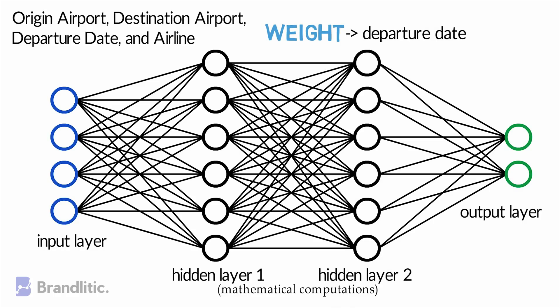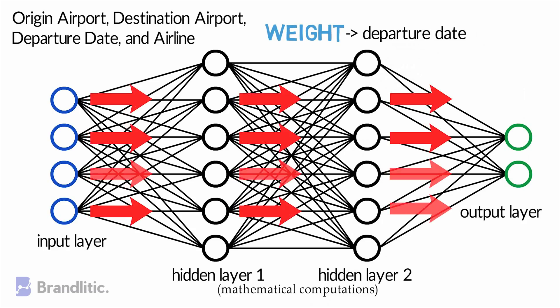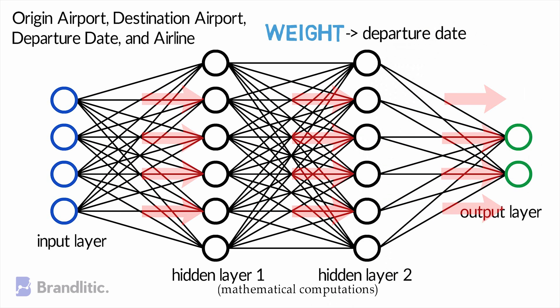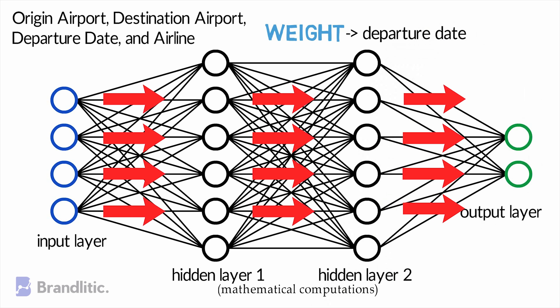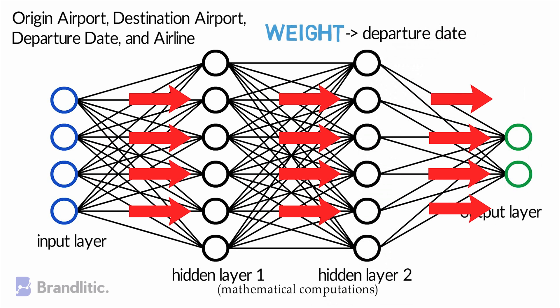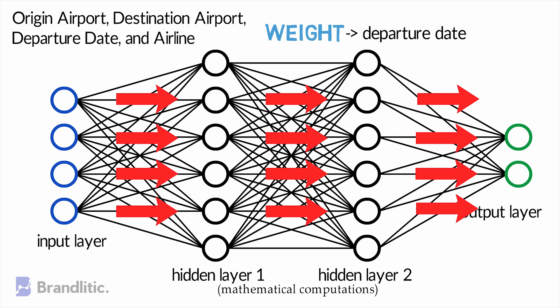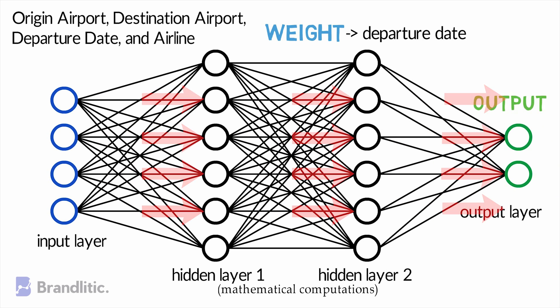Now, as a single neuron in human brain receives thousands of signals from other neurons, similarly, in an artificial neural network, signals travel between nodes and assigns corresponding weights to the next one. A heavier-weighted node will exert more effect on the next layer of the nodes. In the end, the final layer compiles the weighted inputs to produce an output.